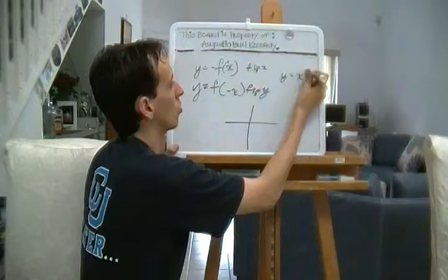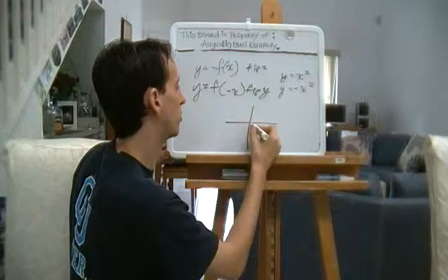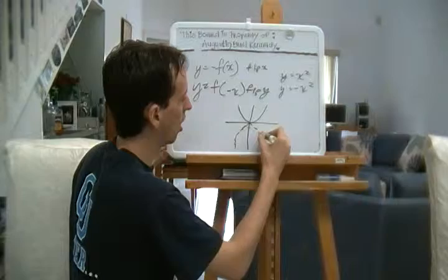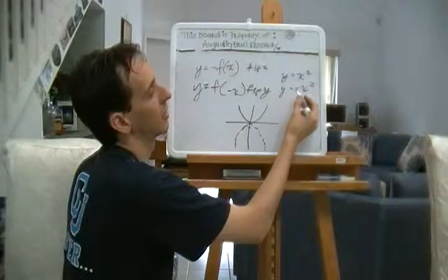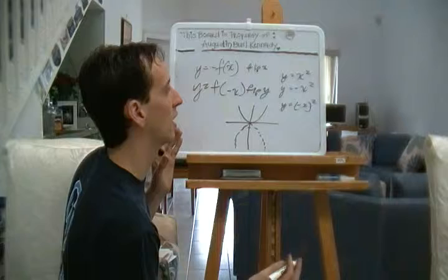See an example of this. We're going to go back to our good friend, Y equals X squared. If we have Y equals negative X squared, well, one is going to be negative one. So we're going to have, instead of this, we're going to have this. We've flipped or reflected it around the X axis by making it negative.